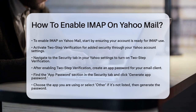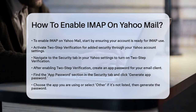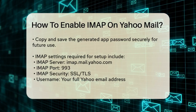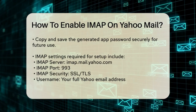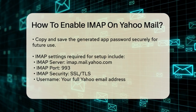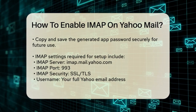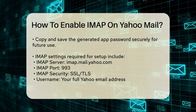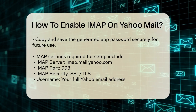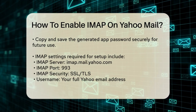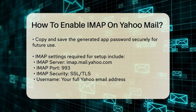Once two-step verification is enabled, you'll need to create an app password. This is because most email clients can't handle the extra security step directly. In your Yahoo account settings, under the Security tab, scroll down and find the App Password section.